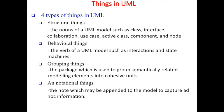Let's talk about things in UML - Unified Modeling Language. There are four types of things. First, structural things, which represent who does the work in a UML model, such as class, interface, collaboration, use case, activity class, component, and node - these are the ones who perform the work. Next, behavioral things, the verb of a UML model, such as interaction and state machine, which shows active or passive connections.